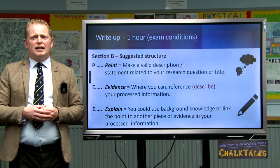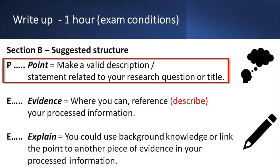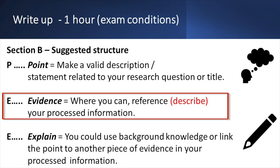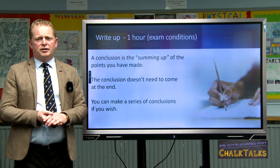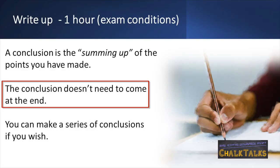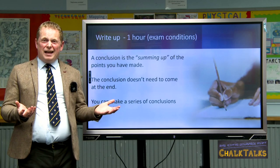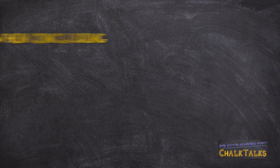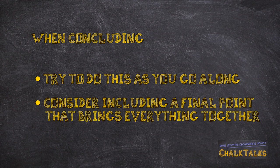One method I use with my class is a PEE structure, though you are free to choose your own. When using a PEE structure, always start with a clear opening statement and make a valid description linked to your research question or title. Use your processed information where you can to back this up with evidence. Then explain using your own background knowledge from your background reading or secondary sources. Finally, make a conclusion — we tend to think of conclusions as things that come at the end, but you can make a series of conclusions as you go. I advise my classes to conclude as they go, and when you reach the end, have one final conclusion that pulls the whole body of your work into one final point.